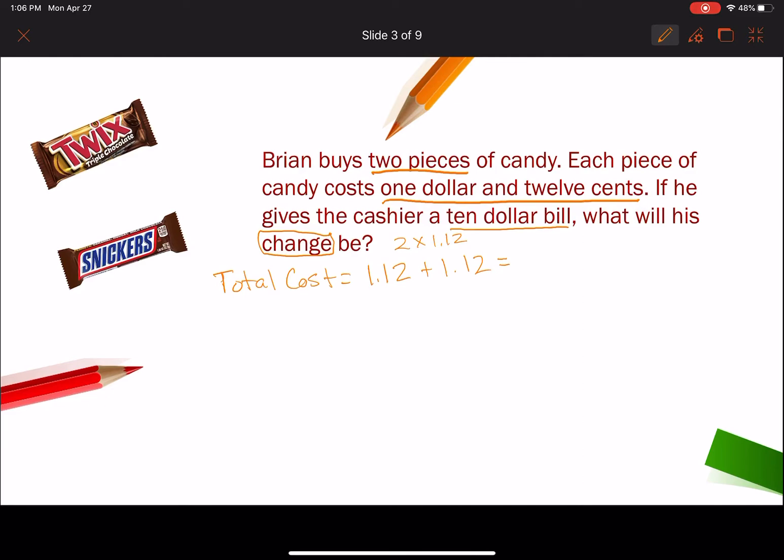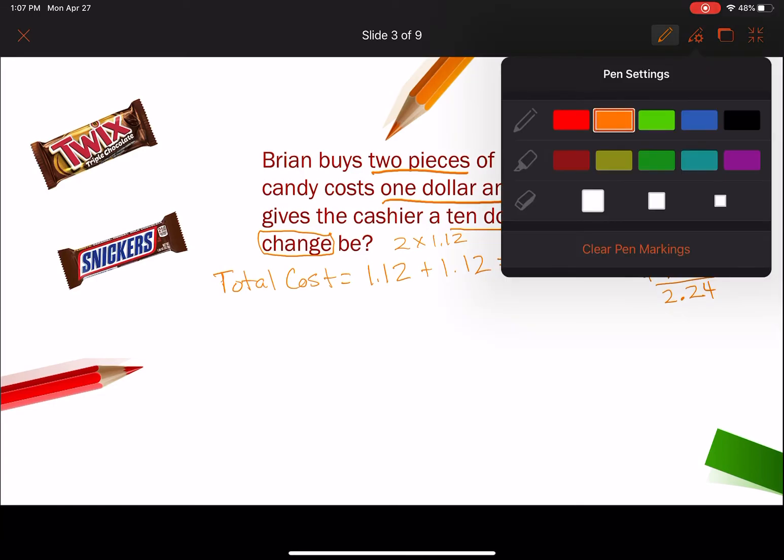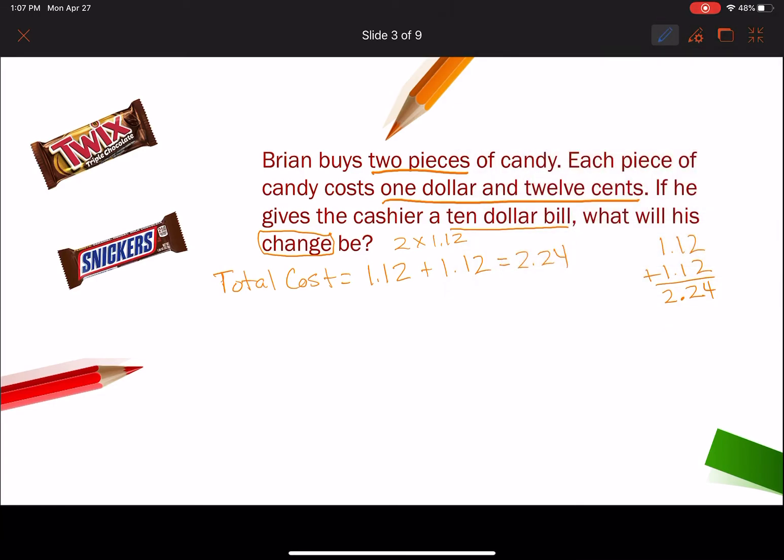So $1.12 plus $1.12. I could stack them if I want and add them that way. Two plus two is four. One plus one is two. Bring down your decimal. And one plus one is two. So his total cost is $2.24. Now, we know how much his total cost is right here. That's how much the candy costs.